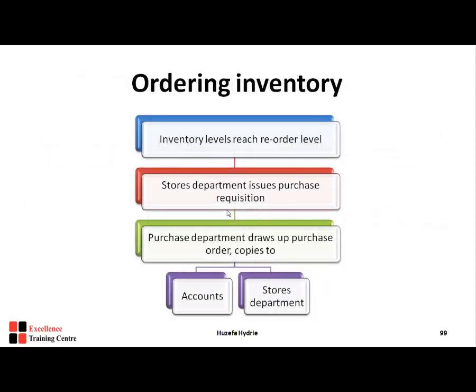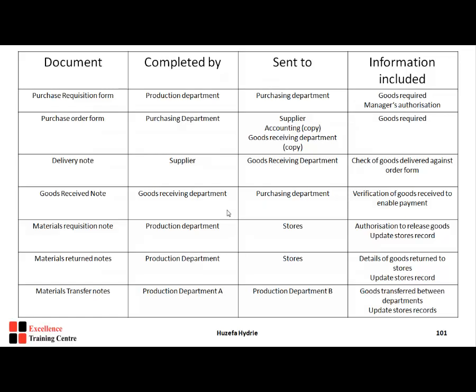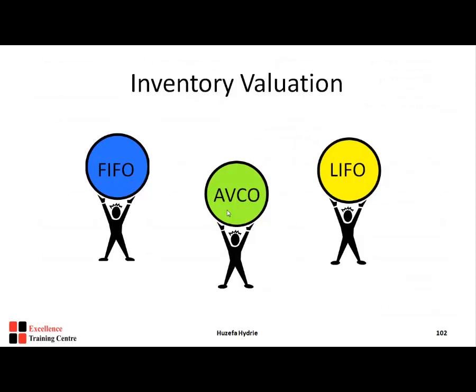We covered the two budgets: the purchase budget or raw material usage budget, and the production budget showing how many units to produce. The closing and opening stock in the purchases budget relates to raw material, while in units produced it relates to finished goods. We also discussed the complete procedure and documents for ordering and receiving inventory.